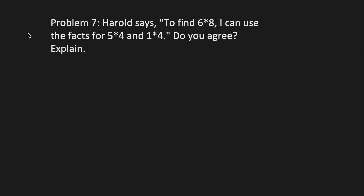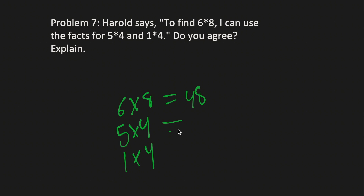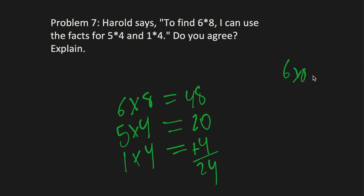Moving on to Problem 7. Harold says to find 6 times 8, he can use the facts 5 times 4 and 1 times 4. Do you agree? So, 6 times 8 is 48. He's trying to add a multiple of 5 and a multiple of 1, but the issue is he used 4 instead of 8. For him to be right, it would need to be 5 times 8 and 1 times 8 — not 5 times 4 and 1 times 4. So I do not agree.